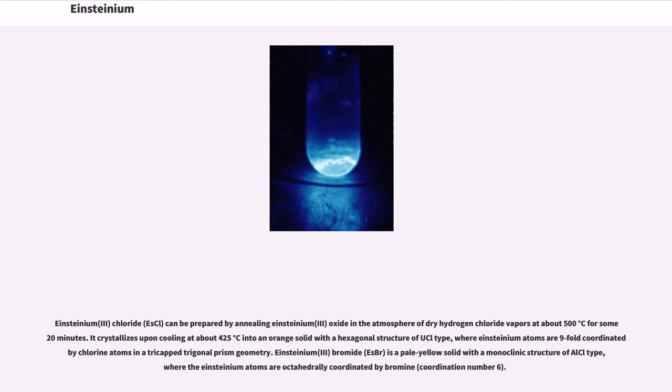Einsteinium-3 chloride, EsCl3, can be prepared by annealing Einsteinium-3 oxide in the atmosphere of dry hydrogen chloride vapors at about 500 degrees Celsius for some 20 minutes. It crystallizes upon cooling at about 425 degrees Celsius into an orange solid with a hexagonal structure of UCl3 type, where Einsteinium atoms are ninefold coordinated by chlorine atoms in a tricapped trigonal prism geometry. Einsteinium-3 bromide, EsBr3, is a pale yellow solid with a monoclinic structure of AlCl3 type, where the Einsteinium atoms are octahedrally coordinated by bromine, coordination number 6.